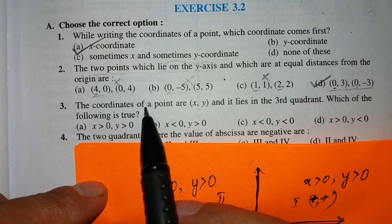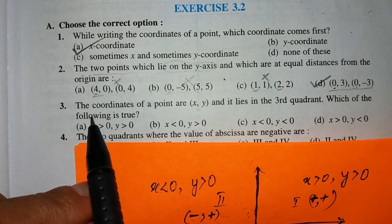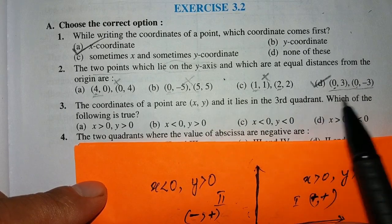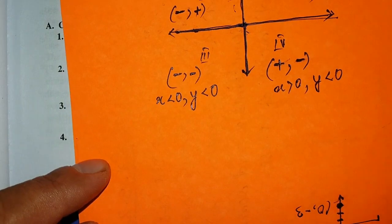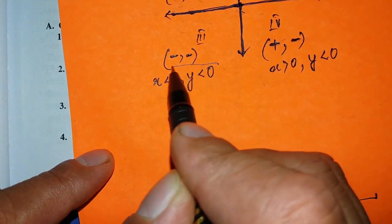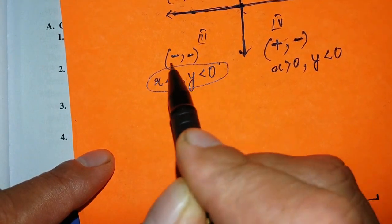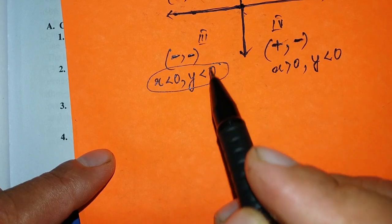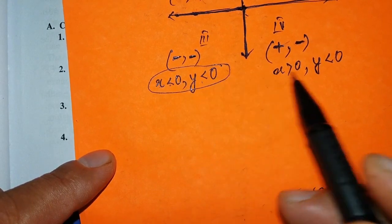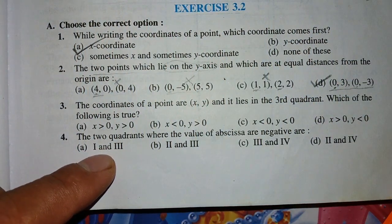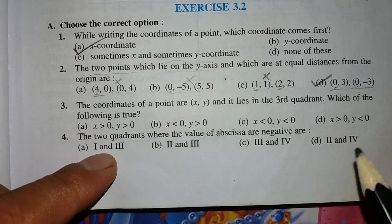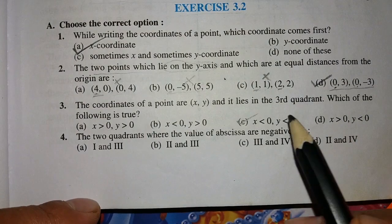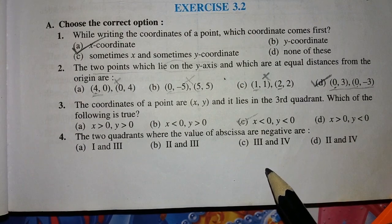Since the point lies in the third quadrant, the X coordinate is negative and the Y coordinate is also negative, meaning x < 0 and y < 0. So our right answer is option C: x < 0, y < 0.